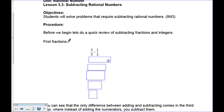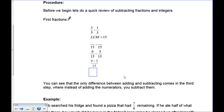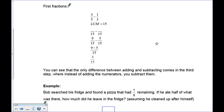I need to find the lowest common multiple of five and three, which is 15 — the number they both go into. Now I need to figure out the numerators. Five multiplied by three gets us 15, so the numerator becomes nine. Then three multiplied by five gets us 15, so one times five gives us five. Now we can subtract them and get four over 15.